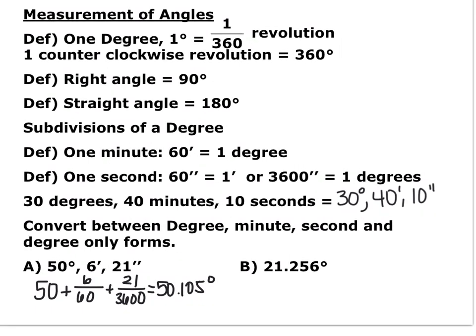For the next one, we go the opposite direction — from decimal degrees to degrees, minutes, and seconds. We have 21.256 degrees. The whole number 21 becomes our full degrees. The decimal 0.256 is what becomes the minutes and seconds, so we need to do a bit of unit conversion.